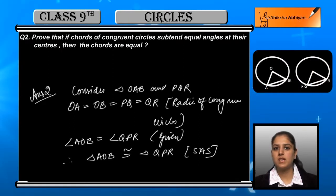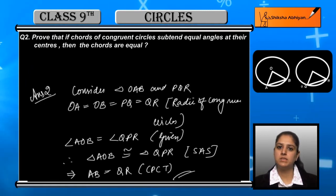By the congruence SAS, now we can say that AB is equal to QR by CPCT.